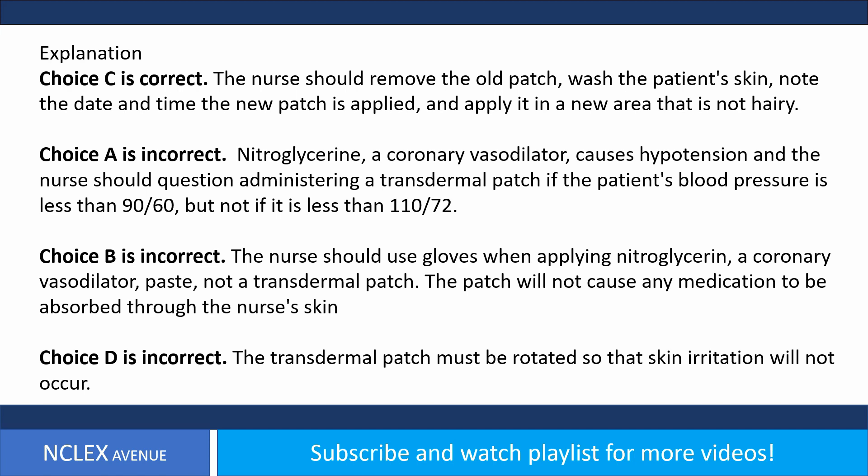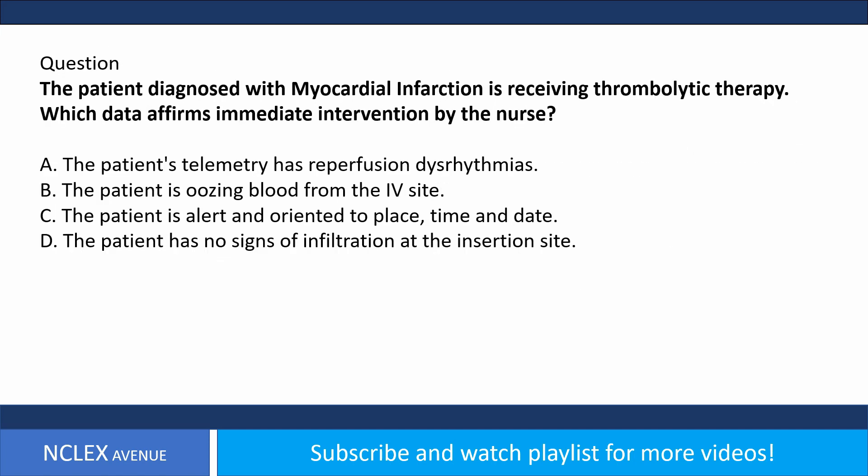Question. The patient diagnosed with myocardial infarction is receiving thrombolytic therapy. Which data requires immediate intervention by the nurse? A. The patient's telemetry has reperfusion dysrhythmias. B. The patient is oozing blood from the IV site. C. The patient is alert and oriented to place, time and date. D. The patient has no signs of infiltration at the insertion site.